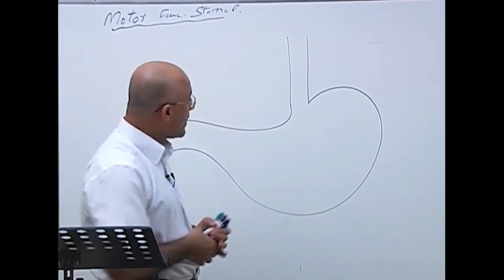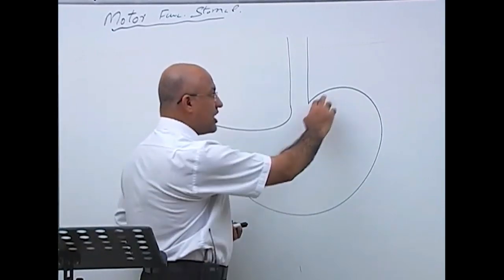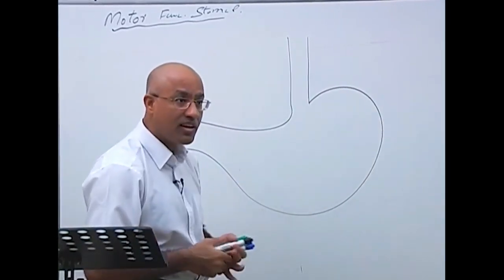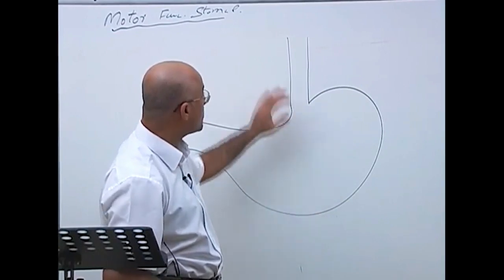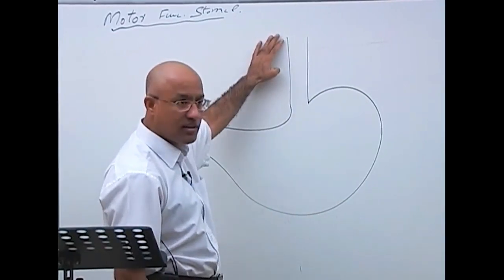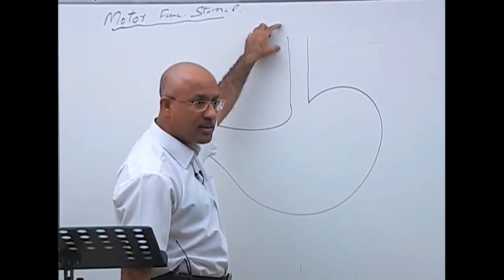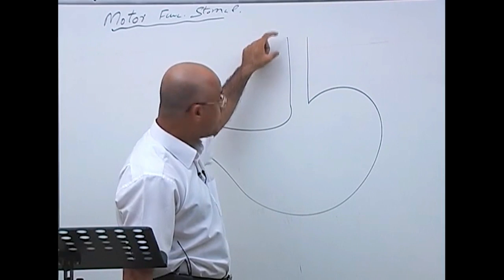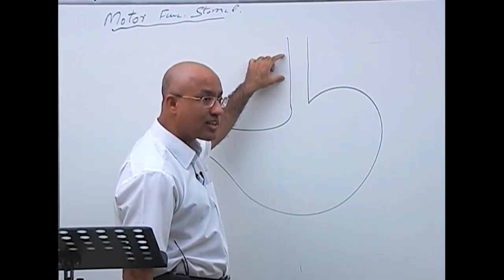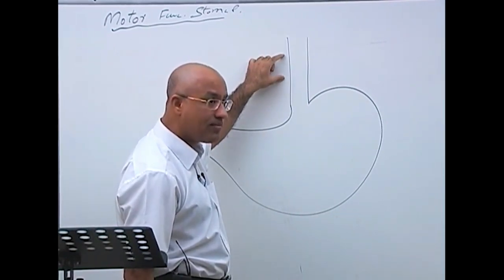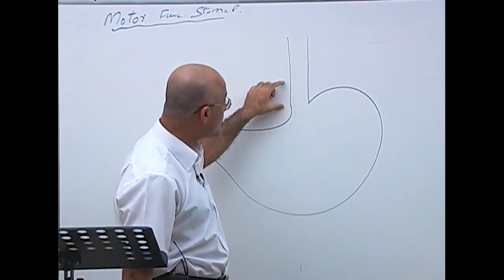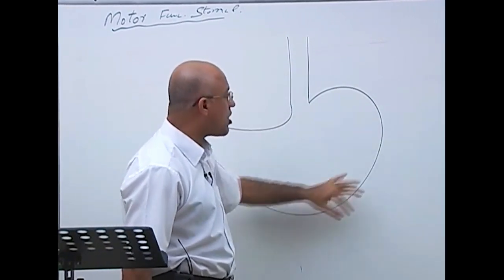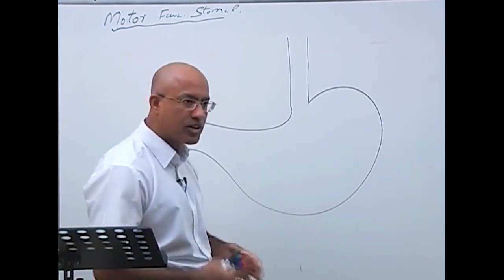All the musculature in the stomach is smooth muscle. Compare this with the esophagus: the upper one-third of the esophagus is striated muscle, the middle one-third is striated and smooth muscle, and the lower one-third is smooth muscle. But in the stomach, all the muscle is smooth muscle.